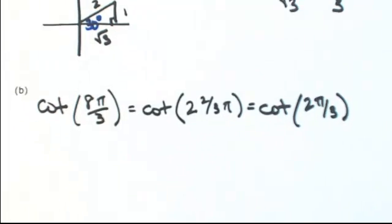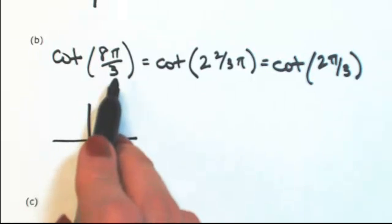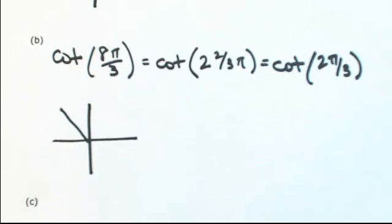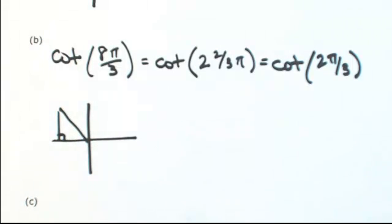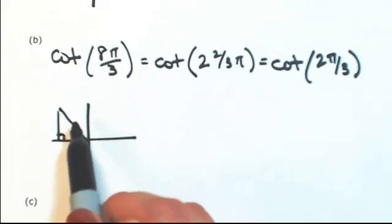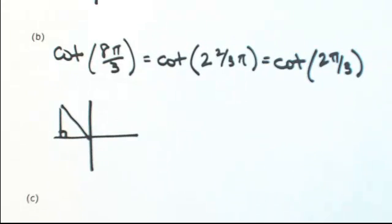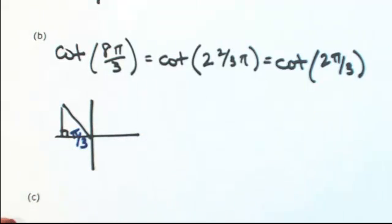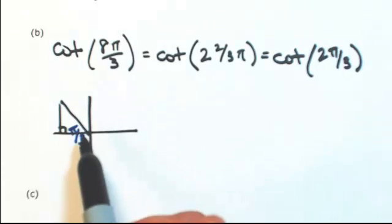And we're going to get the same value. So I'm going to draw 2π over 3 now, coterminal with 8π over 3. Extend it back down to the x-axis. So if that angle is 2π over 3, then the reference angle would be 1π over 3, or 60 degrees.